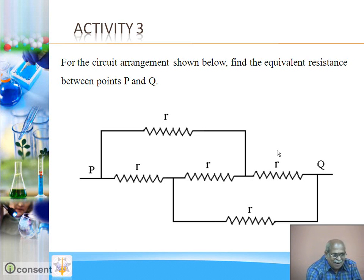This R, this R series, so two R. This R, this R series, so another two R. This R is removed. This two R and this two R are in parallel. So equivalent resistance R. Answer is simple R.